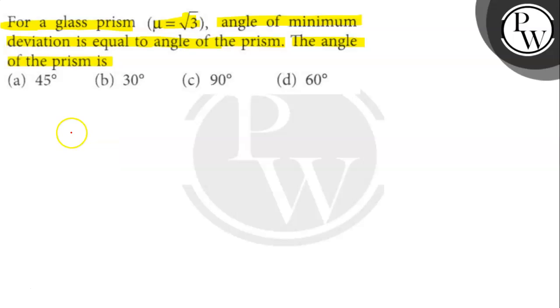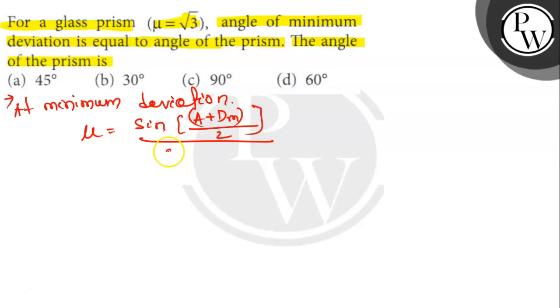Let's write down the solution. According to the question, at minimum deviation, μ equals sin of (A plus Dm) divided by 2, all divided by sin A by 2.